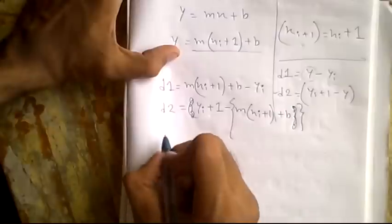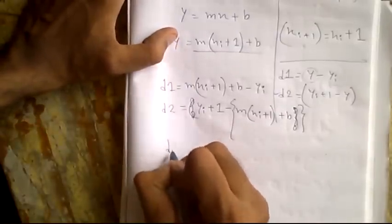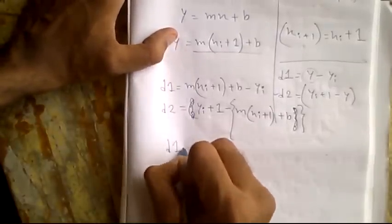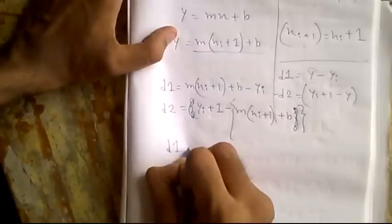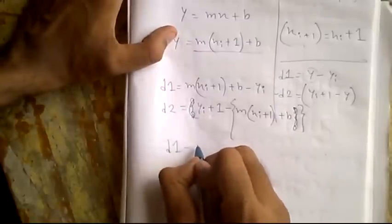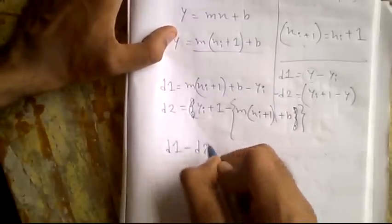Now we will subtract d1 and d2 — we will subtract d2 from d1.